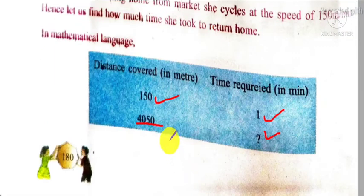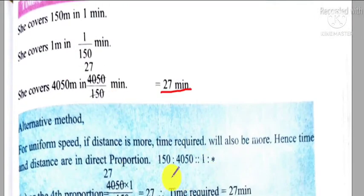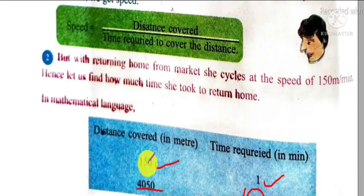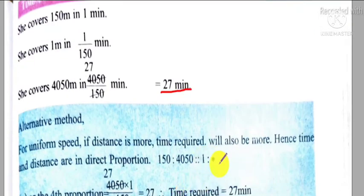So here we can easily find out the time by solving unitary method like this, and our answer will be 27 minutes. Or in an alternative way, we can use proportional method. Here 150 is to 4050 equals to 1 is to x, or x equals to, by calculating or by using cross multiplication method, we will get the value of star or x, which will be 27 minutes.